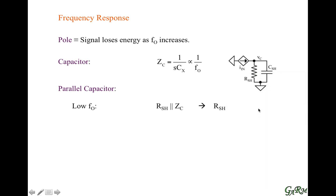As frequency increases, the capacitor impedance starts decreasing, and at very high frequency the capacitor offers much less impedance than the resistance. The capacitor impedes the current much less, so the current goes entirely through the capacitor and it's like the resistor isn't even there. At very high frequencies, this RC network reduces to a capacitance.